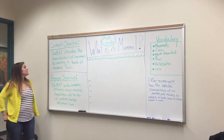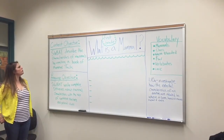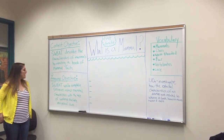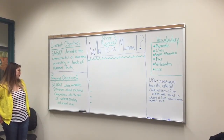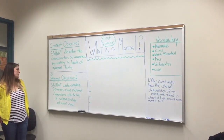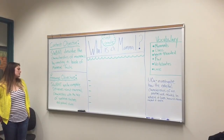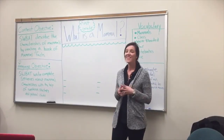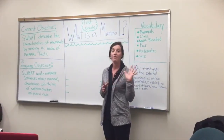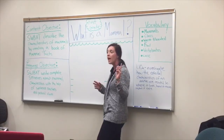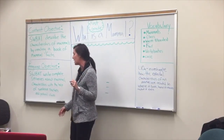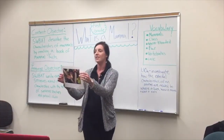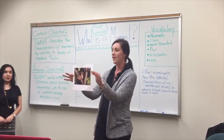The lesson will be for first grade, and the TEKS covered is 1.10A, which is: investigate how the external characteristics of an animal are related to where it lives, how it moves, and what it eats. The content objective is students will be able to describe the characteristics of mammals by creating a book of mammal facts. The language objective is students will be able to write complete sentences about mammal characteristics with the help of sentence starters and pictorial clues.